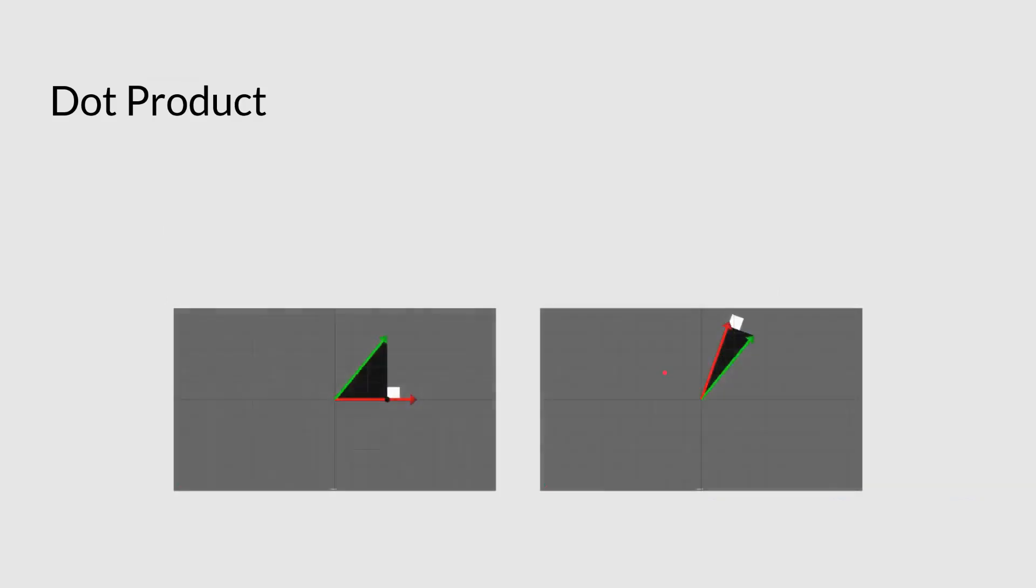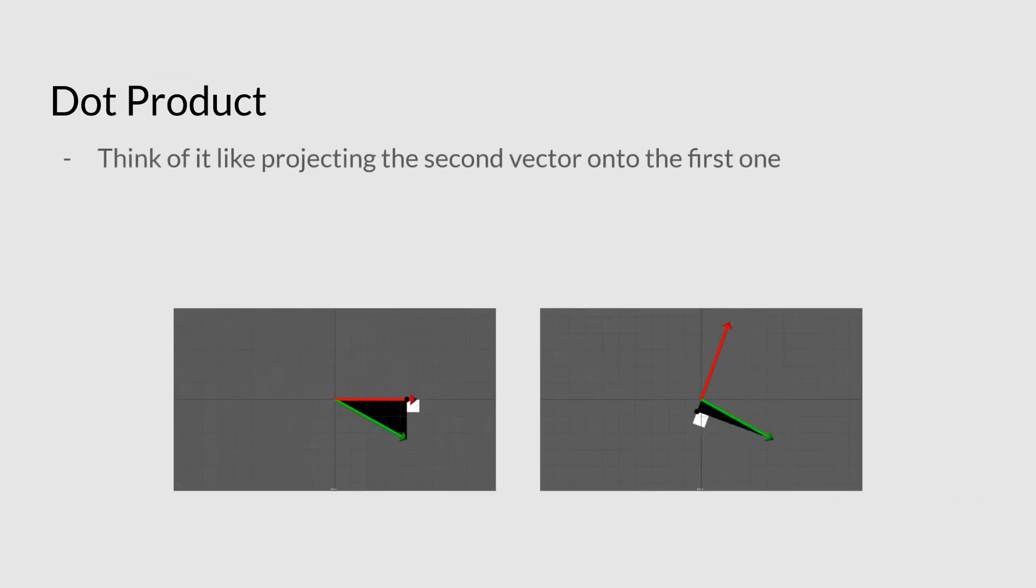Now, let's dive a bit more deeper into the dot product just to try and figure out really what's happening here. So you can think of the dot product as projecting the second vector onto the first one. So in this case, these gifs that you see here, the first vector is the red vector. So what we're saying here is the red vector dot the green vector.